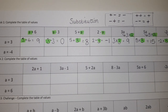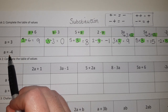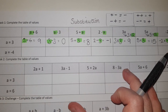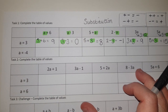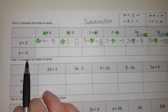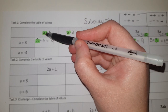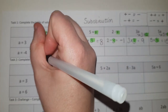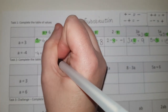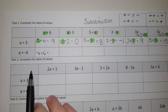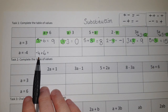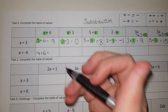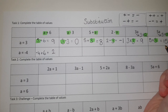We're going to do those same examples again, but this time everywhere you see an A, like we did before, we're now going to swap A out with minus 4. So just be very careful. Instead of A plus 6, it's now going to be minus 4 add 6. You're going to start at minus 4 on your number line and add on 6 — that's going to give us 2.